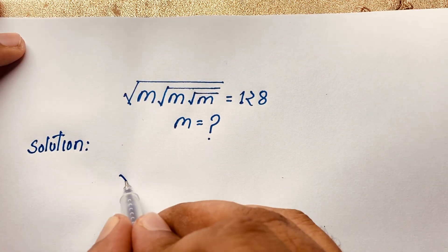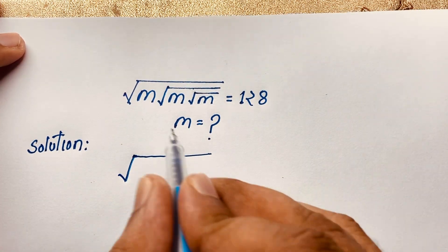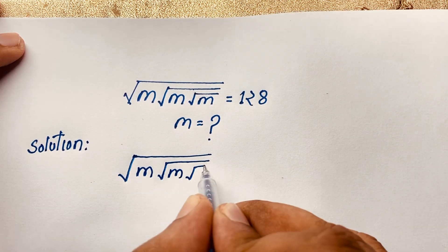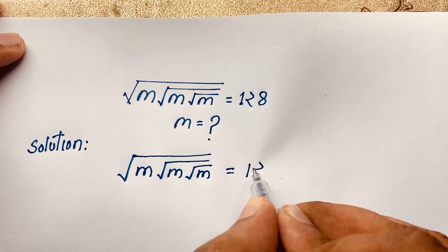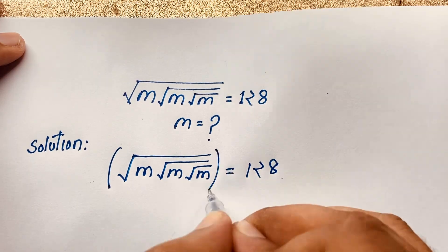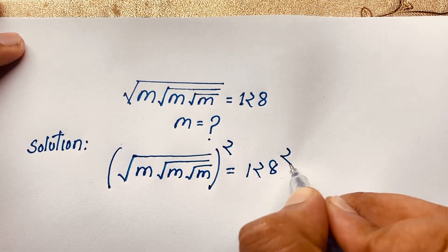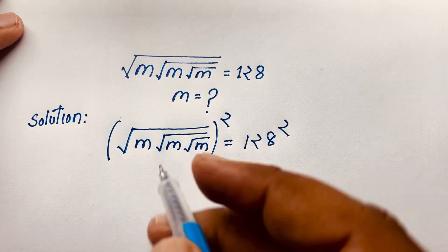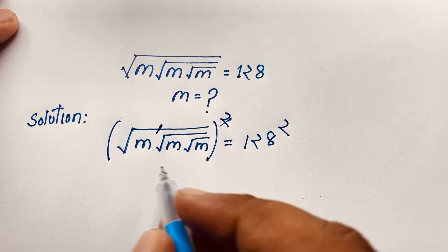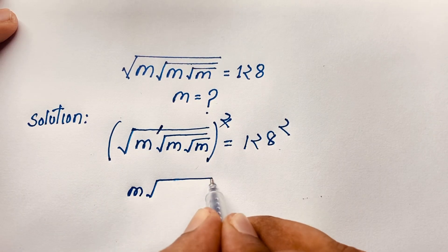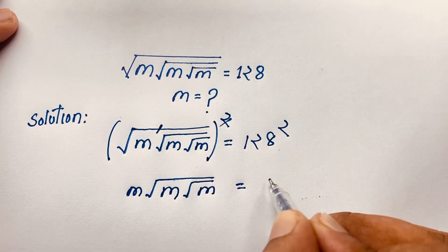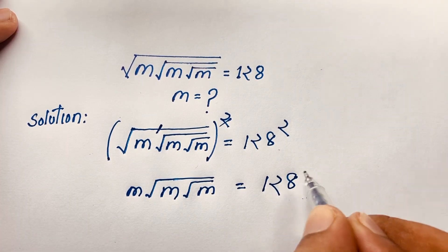Our question is: square root of m times square root of m times square root of m is equal to 128. Now I use both sides to the whole power of 2 — squaring both sides. You can see the square root and the square cancel, giving us m times square root of m times square root of m equals 128 squared.